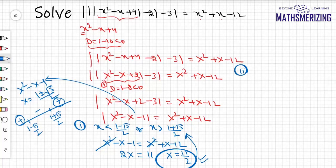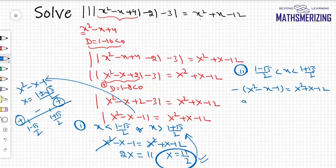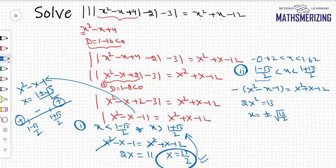For Case 2, when x lies between (1 - √5)/2 and (1 + √5)/2, the function x² - x - 1 is negative. So we write -(x² - x - 1) = x² + x - 12, giving 2x² = 13, so x = ±√(13/2). This doesn't lie in the interval (approximately -0.62 to 1.62), so there's no solution here. The only answer is x = 11/2.